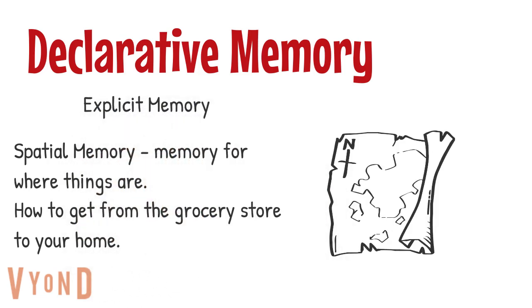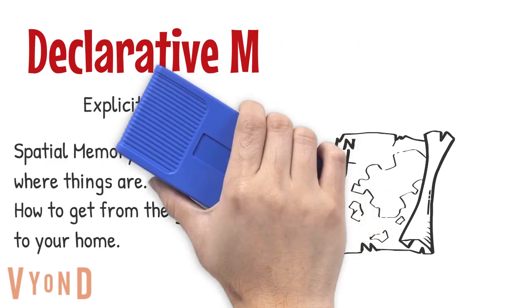Spatial memory is a type of declarative memory for where things are. For example, you have a spatial memory for how to get to the grocery store from your home.